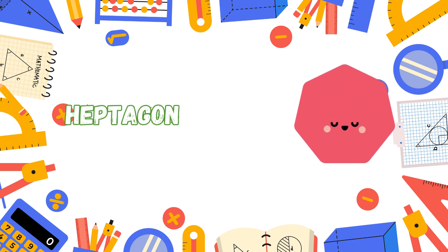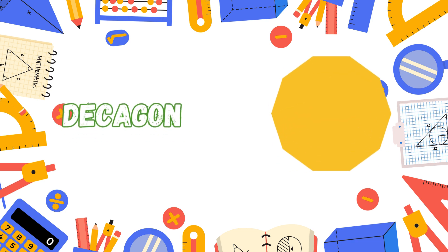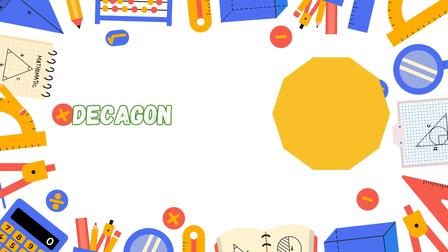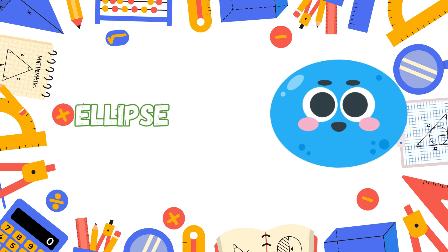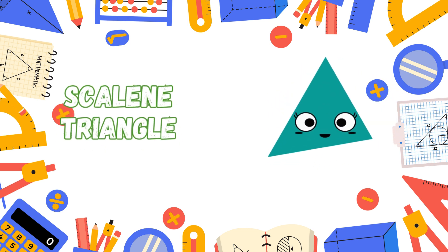Nonagon has nine sides so neat, a rare shape, it's quite the feat. Decagon has ten sides to see, a polygon with symmetry. Ellipse is stretched, long or wide, a lovely shape on every side.